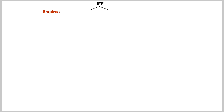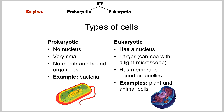There are two empires: the prokaryotic and the eukaryotic. The prokaryotic cells are very simple — they include bacteria, for example. They have no nucleus, they're very small, and have no membrane-bound organelles.